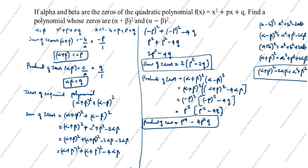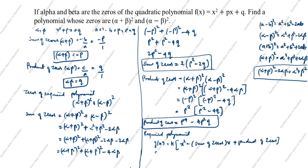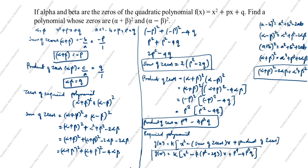The required polynomial g(x) = k[x² − (sum of zeros)x + (product of zeros)]. Therefore, g(x) = k[x² − 2(p² − 2q)x + (p⁴ − 4p²q)]. This is the final answer. Thanks for watching this video.